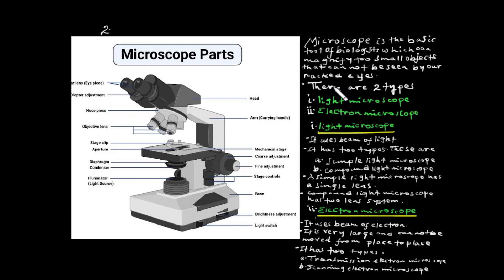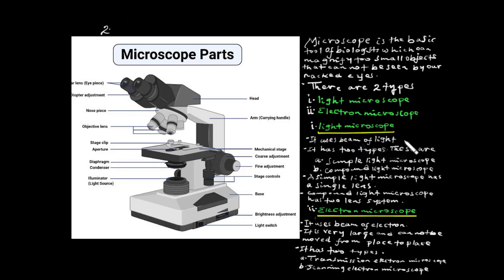This microscope is a magnifier — it is a biological laboratory tool. This microscope is a binocular microscope. There are two types of microscope: the light microscope and another type. A light microscope uses a beam of light and has two subtypes: the simple light microscope and the compound light microscope.